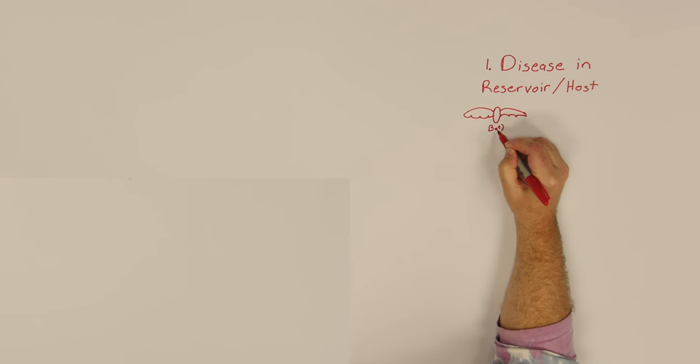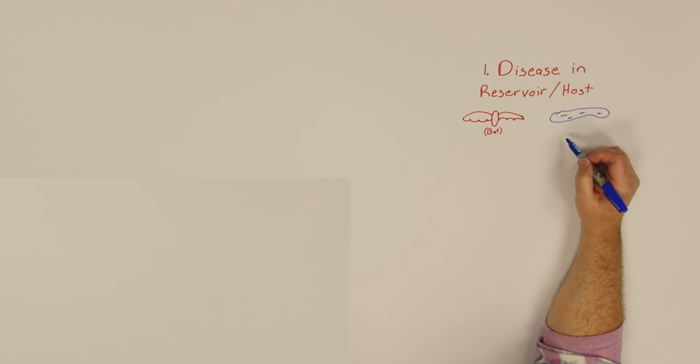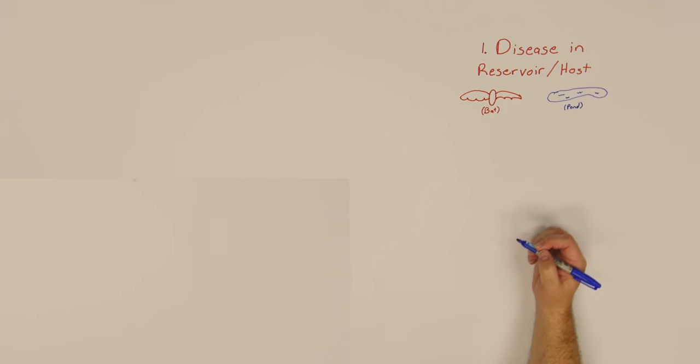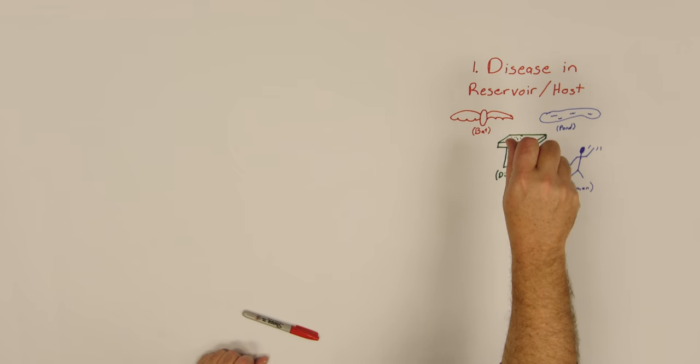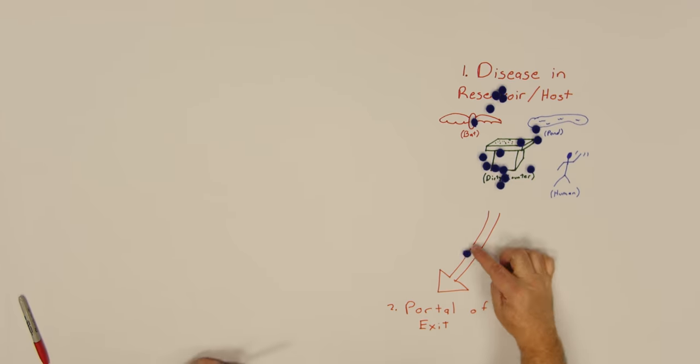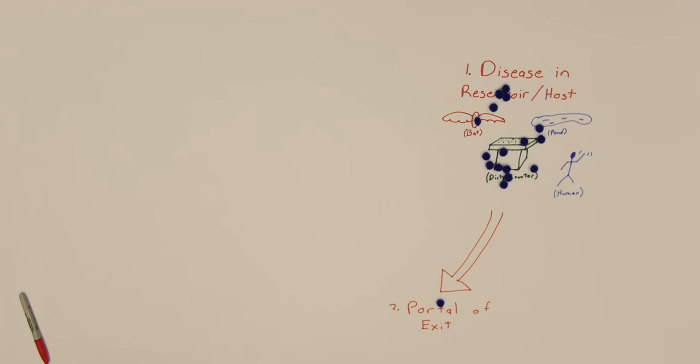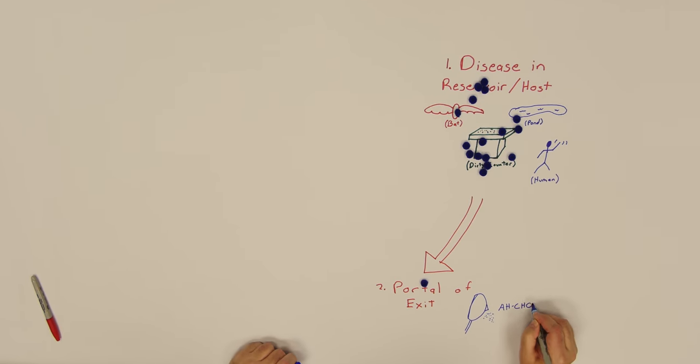Back to the reservoir. This could be an animal where the pathogen lives until it transfers to humans, a place like water or soil, a dirty surface, or already in a human host. The pathogen hangs out here until it finds a portal of exit, which is the way the pathogen leaves its reservoir host, such as a sneeze.